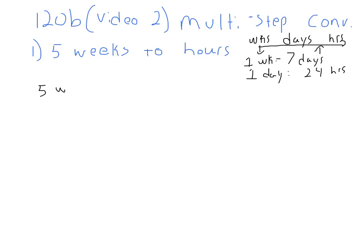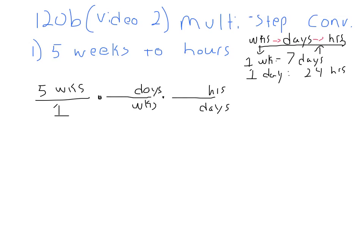Now that we have the roadmap and the numbers, we can start setting up the fraction. I started with five weeks — write it as a fraction over one. The next fraction: we need to cancel weeks. Look at your roadmap — after weeks, we said we were going to days. So if weeks is on top, we need weeks on the bottom. Then afterward we said we were going to days — do we want days? No. So days goes in the numerator, and what comes after days? Hours. Is hours the unit we want? Yes. Circle it and write an equal sign.